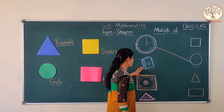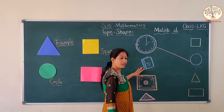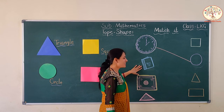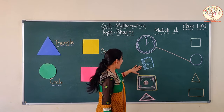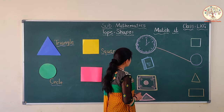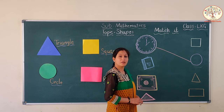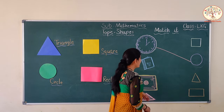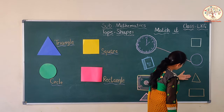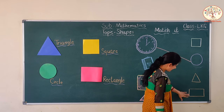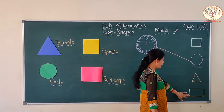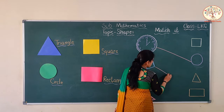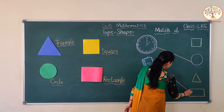Now, what is the next? Can you tell me what is this? This is a book, and the book is the shape of a rectangle. Where is the rectangle here? This one is a rectangle. So, we will match the book to the rectangle.